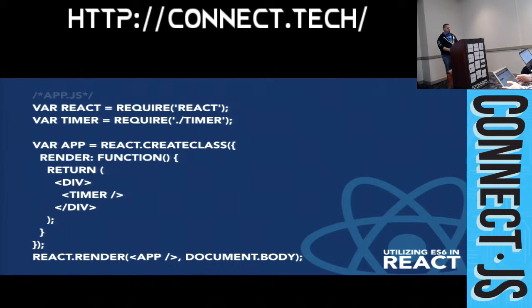Let's talk about props and state — these get some changes. In ES5, you have getDefaultProps and getInitialState methods that bring back all the pieces you need. In ES6, getDefaultProps has to become a property of the class, defined after the class is declared — so defaultProps moves to the bottom. You can also add propTypes as an additional property at the end.